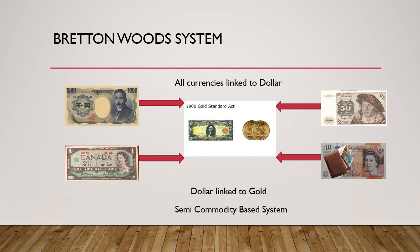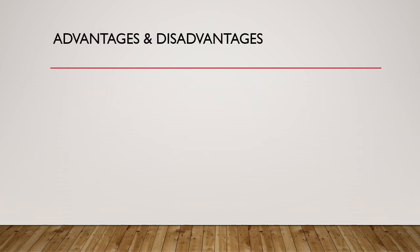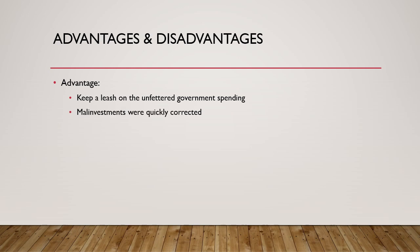This was a semi-commodity-based system. The advantages were that it kept a leash on unfettered government spending, as the money supply in the economy was ultimately limited by the physical amount of gold. Malinvestments were quickly corrected because as malinvestments grew, they could not be papered over by the government, since the monetary supply was limited.